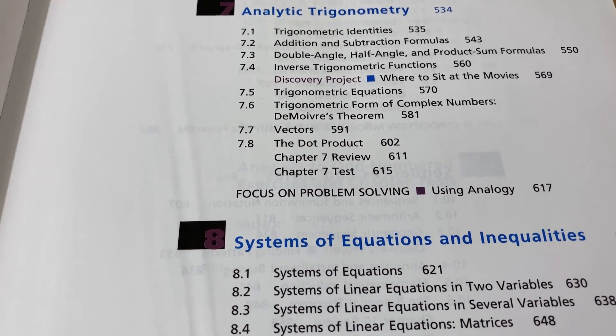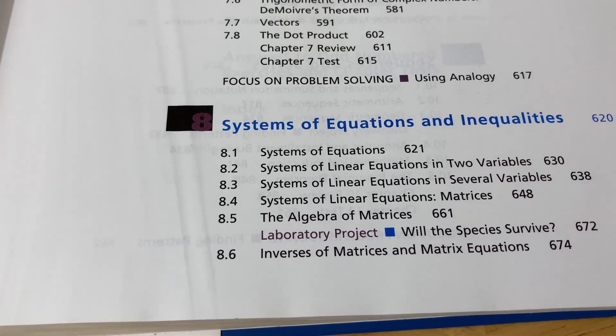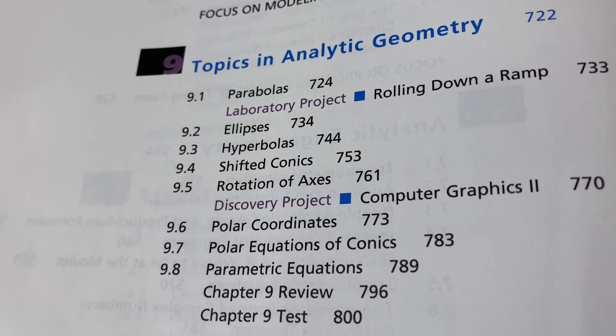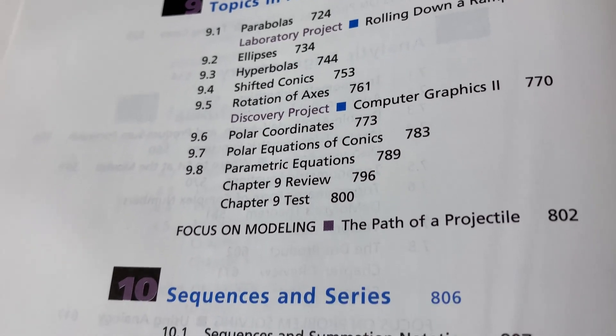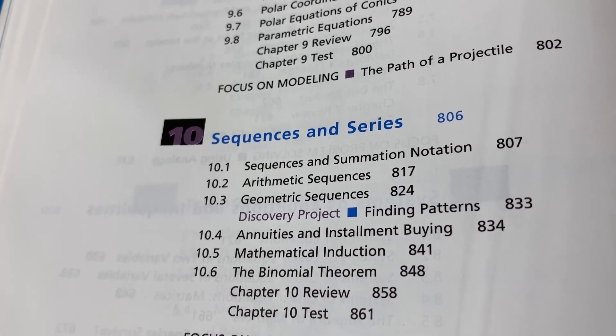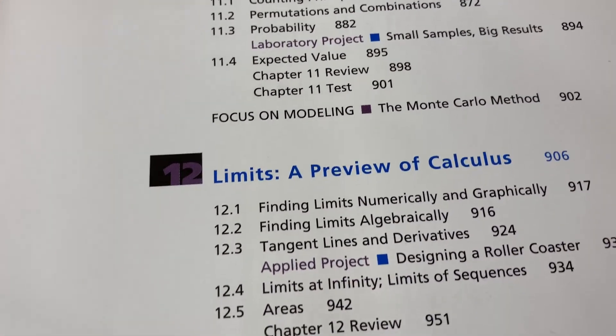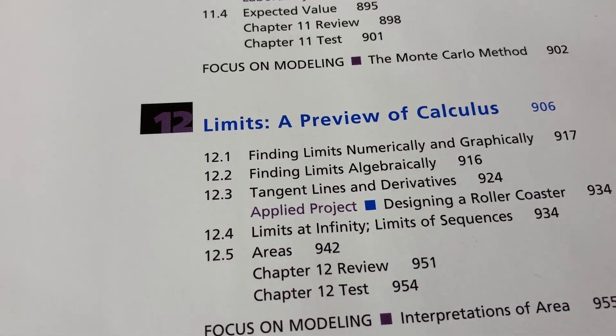And then 8 jumps to systems of equations and inequalities. It even talks about matrices. Chapter 9 is on conics and polar coordinates. And then 10 is on sequences and series, including some induction. 11 is on counting and probability. And then chapter 12 gives you a short preview of calculus, which I think is really cool.